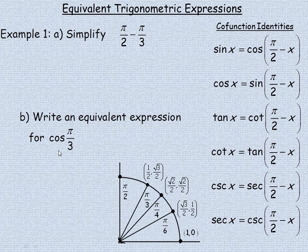Now in part B here, we're going to find the equivalent expression for the cosine of pi over 3. So what we're going to do in part A is take pi over 2 — because all of these are pi over 2 minus an angle — and subtract pi over 3 from it. That's how we'll find an equivalent sine expression for the cosine of pi over 3.